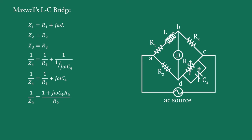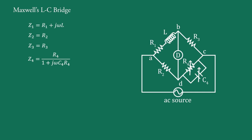Taking the reciprocal we get Z4 equals R4 upon (1 plus jωC4·R4). Therefore using the balance condition we can write: (R1 plus jωL) multiplied by R4 upon (1 plus jωC4·R4) equals R2·R3.